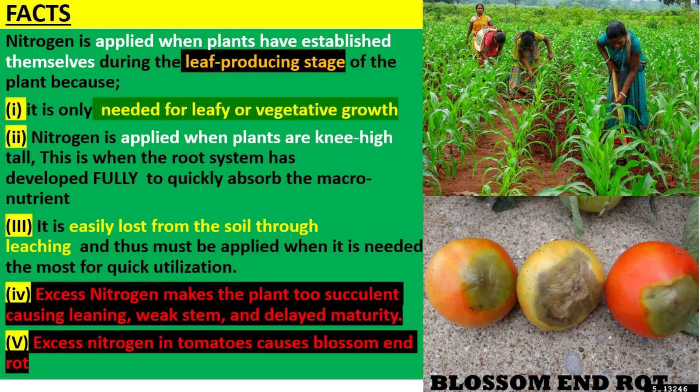Nitrogen is easily lost from the soil through leaching, and thus must be applied when the plant has roots for quick absorption when it is needed most by the plant during the vegetative stage. Excess nitrogen makes the plant too succulent, causing leaning, weak stem, and delayed maturity.